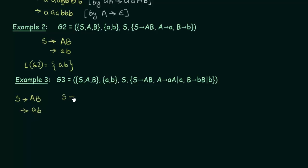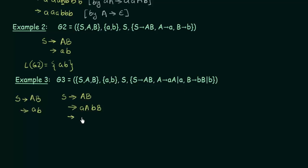Now choosing the production A gives AA, instead of A I write AA. And for B, choosing B gives BB, I write BB. Expanding further, each A becomes small a and each B becomes small b, giving the string aabb. This is another string that can be generated from grammar G3.